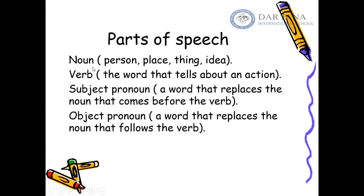First we took the noun. A noun could be a proper noun or a common noun. When a word talks about a person, place, thing, or idea, it is a common noun. A proper noun is, for example, Muhammad or any name that we call people, places, or things — for example, Darjana. The verb is the word that tells about an action. If I say Muhammad goes to school every day, then 'goes' is a verb.